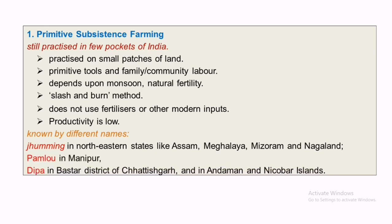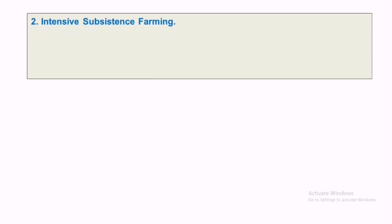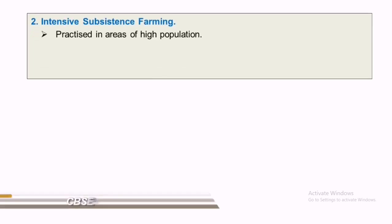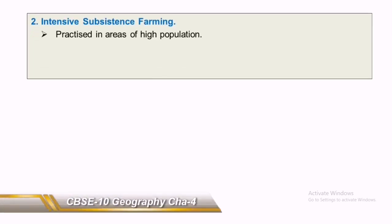The productivity of this type of farming is low. It is known by different names in different parts of our country — Jhumming, Paam Looa, and Dipa in the northeastern states; Jhumming in Manipur; Paam Looa in the tribal areas of Chhattisgarh; and it is called Dipa in some regions.